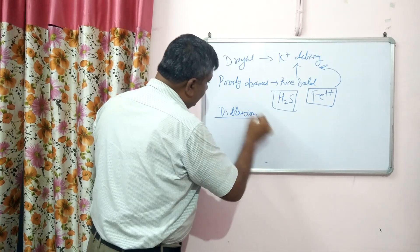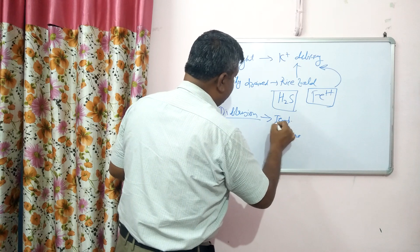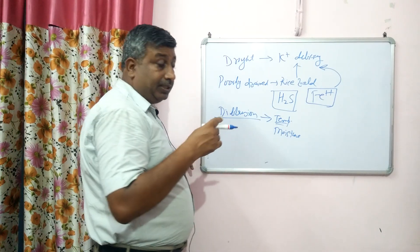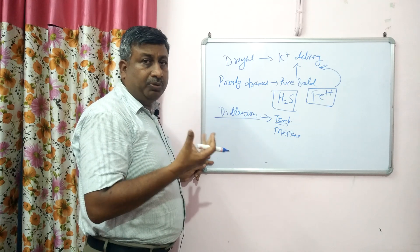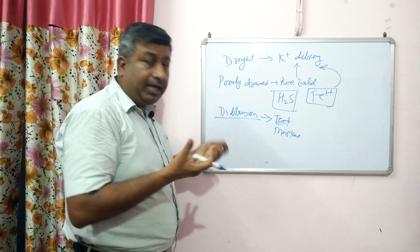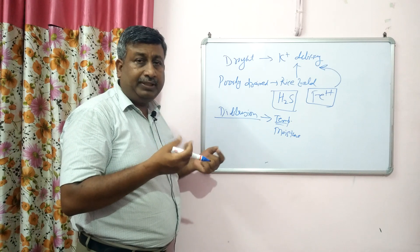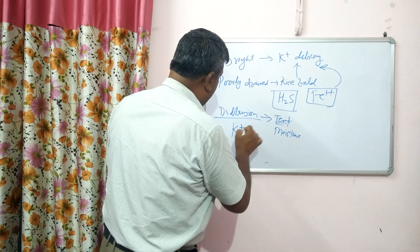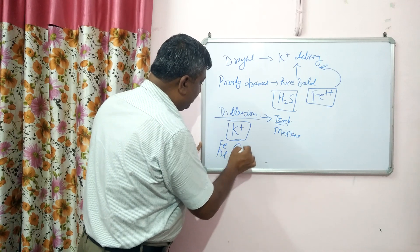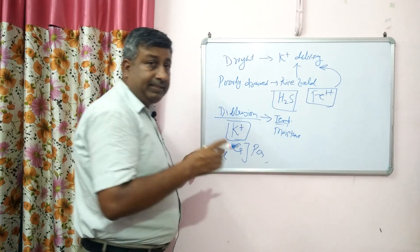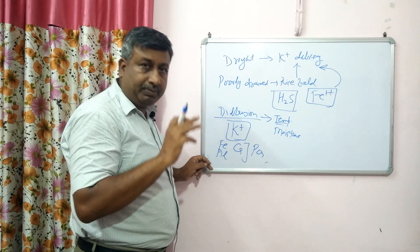Potassium availability through diffusion is affected by temperature and moisture. In winter, phosphorus deficiency is more common than potassium deficiency. This is because potassium remains in K⁺ ionic form and is also available through mass flow, while phosphate exists in insoluble iron, aluminium, or calcium phosphate forms — making phosphorus deficiency more common in winter but not potassium.